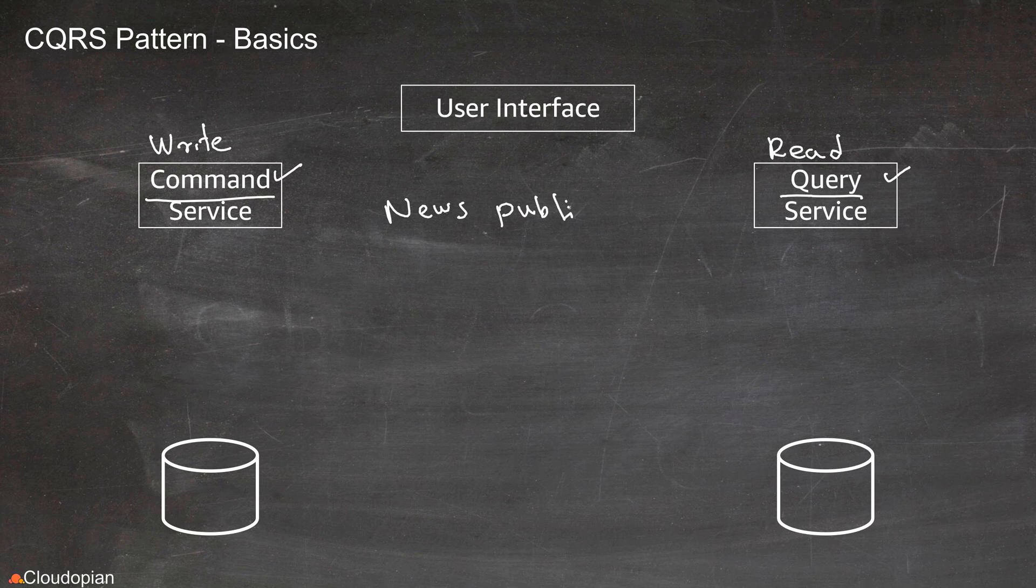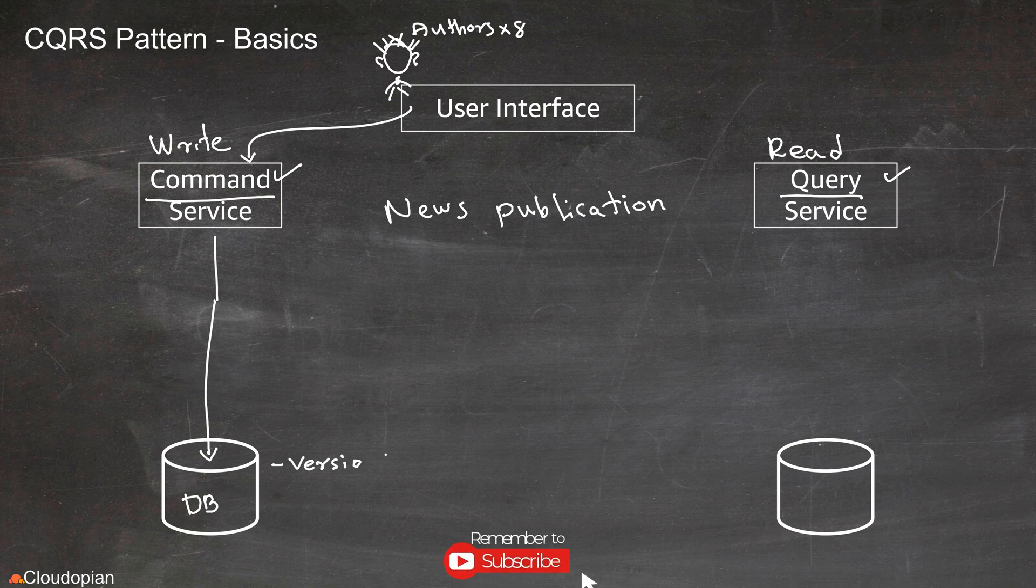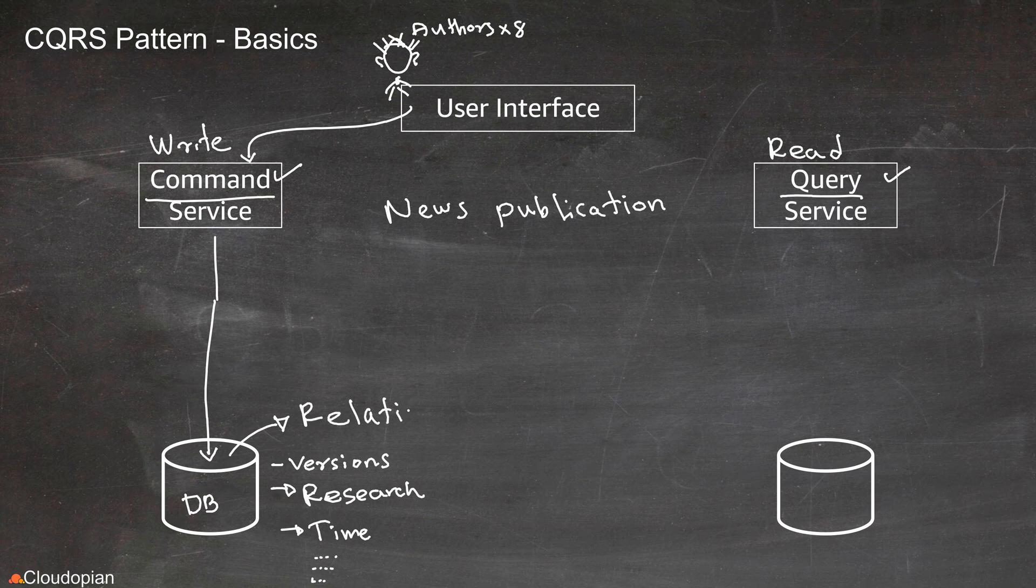Imagine that this service is for a news publication company and there are going to be maybe a handful of authors who are going to write these news articles. When you write these articles, authors may need to maintain some information like how many hours they work on the project. Maybe they need to maintain some versions of the applications or sometimes they need to keep track of their research related to that news article in the database. To maintain this kind of information, maybe the suitable data source for this can be a relational database.